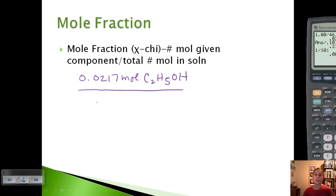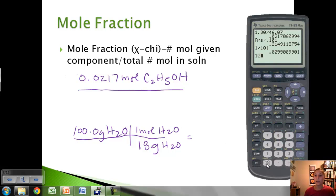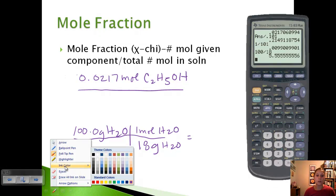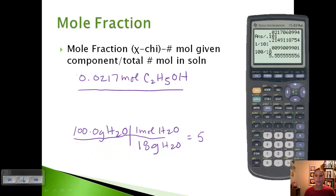We know part of the total is ethanol, but the other part is water. We started with 100 grams of water. In one mole of water, we have approximately 18 grams. Taking 100 grams divided by 18 molar mass gives us 5.556 moles of water.